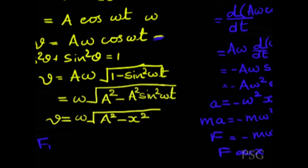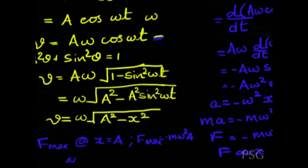Force is maximum at displacement x equal to amplitude A: F_max = −mω²A. Similarly, force is zero at x = 0, which is the mean position, so F_min = 0 since displacement is zero there.